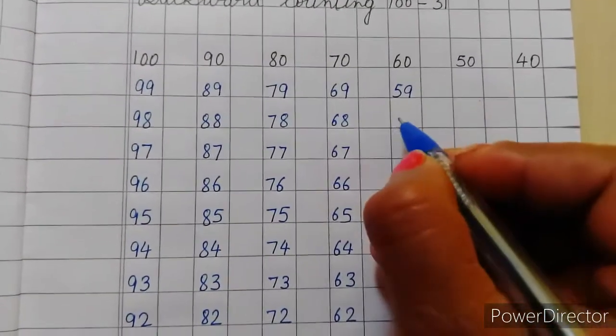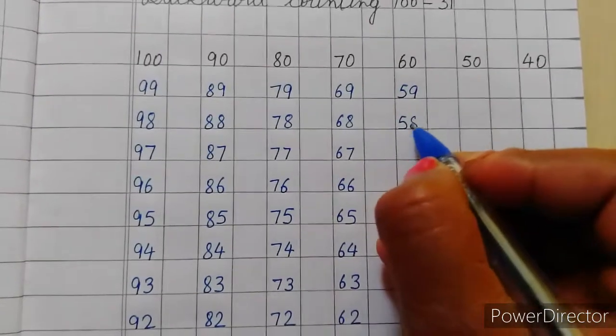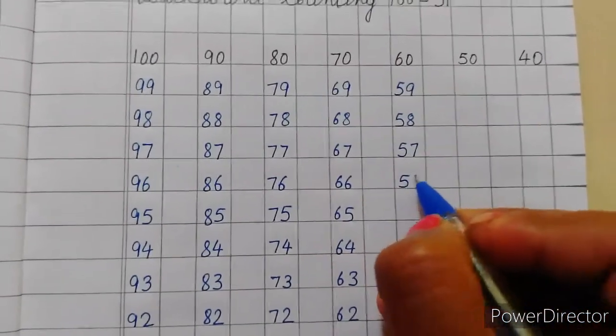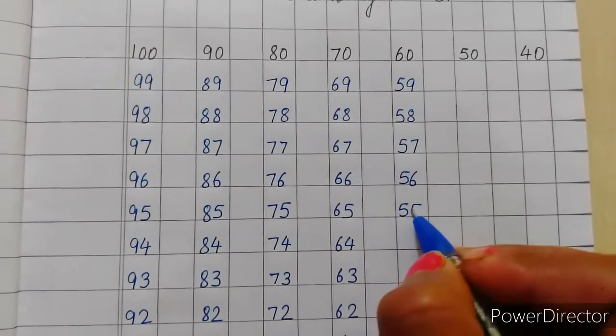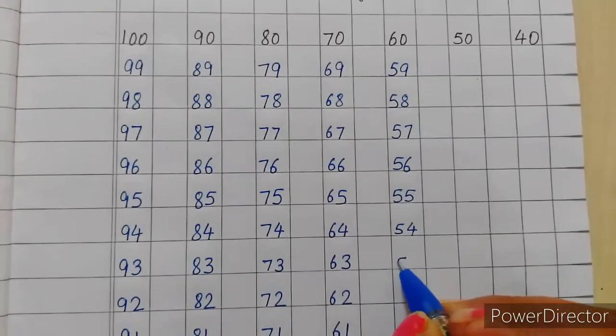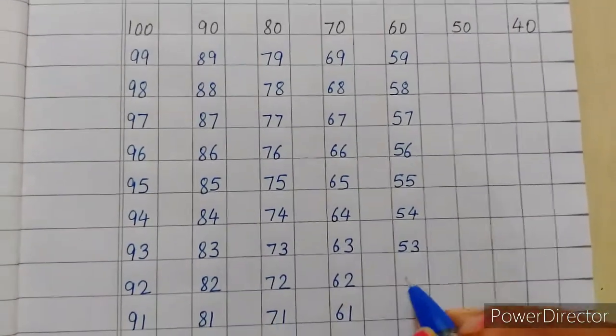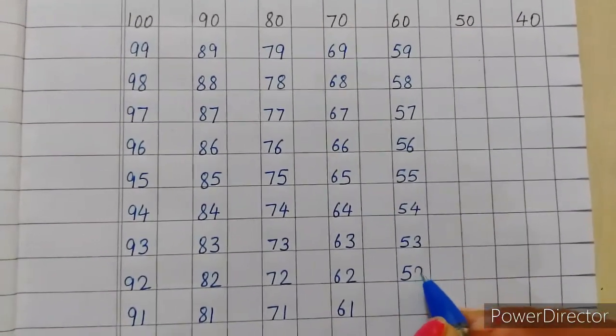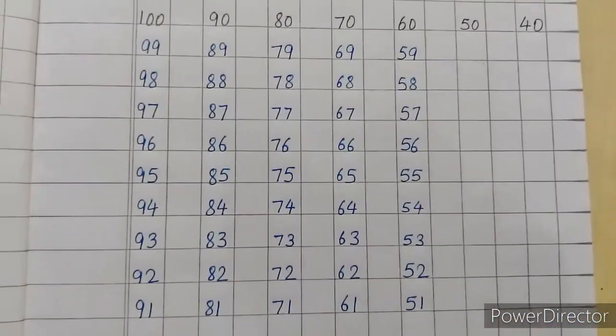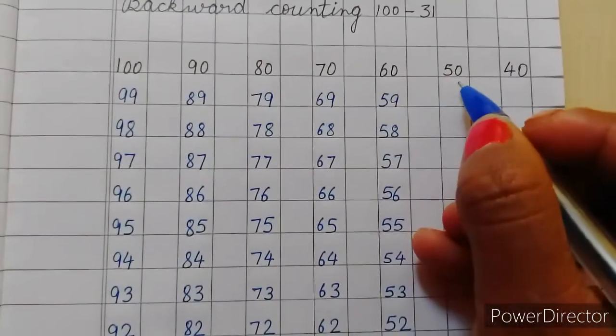5, 9, 59, 5, 8, 58, 57, 57, 56, 55, 55, 55, 54, 54, 53, 53, 52, 52, 51, 51. Abhi 5, 0, 50.